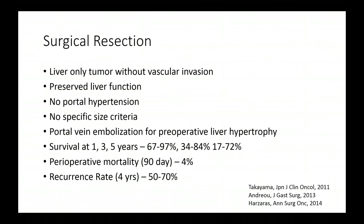Surgical resection is the preferred method for liver-only disease without vascular invasion, with preserved liver function and without portal hypertension. Survivals are better than all other modalities if you can achieve resection. There is some perioperative mortality, and unfortunately, when you do a resection, there is a significant risk of recurrence — generally between 50% and 70% recurrence rates at four years.